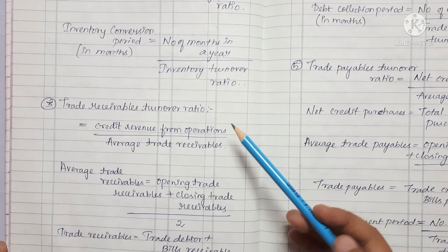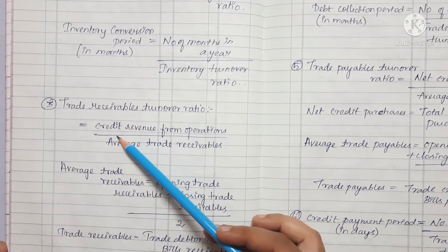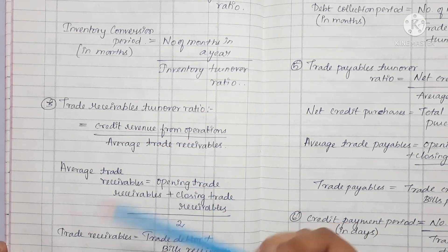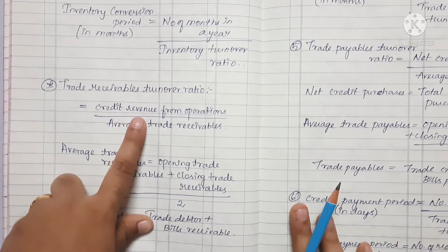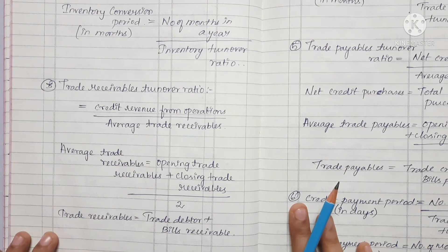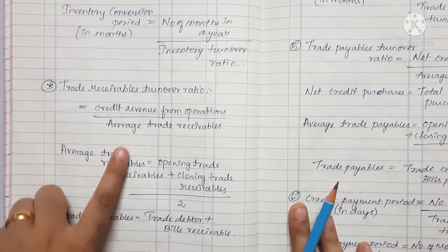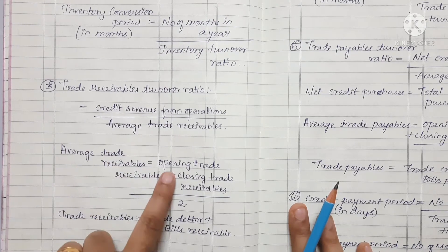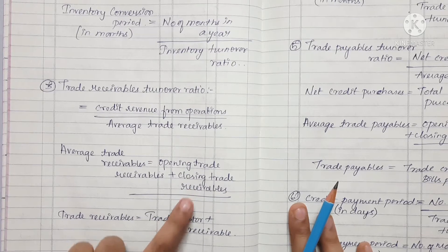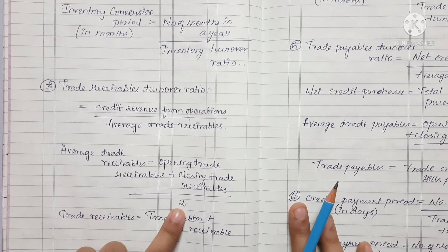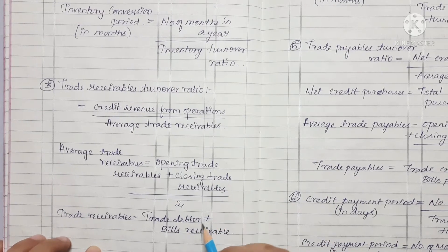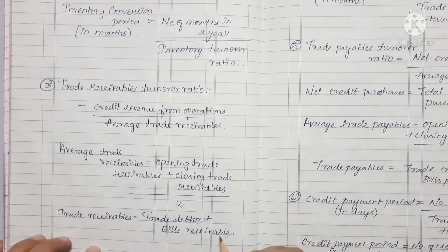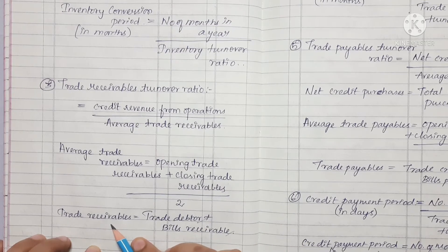The second turnover is Trade Receivable Turnover Ratio, which equals Credit Revenue from Operations divided by Average Trade Receivables. Average Trade Receivables equals Opening Trade Receivables plus Closing Trade Receivables divided by 2. Trade Receivables means Debtors plus Bills Receivable.